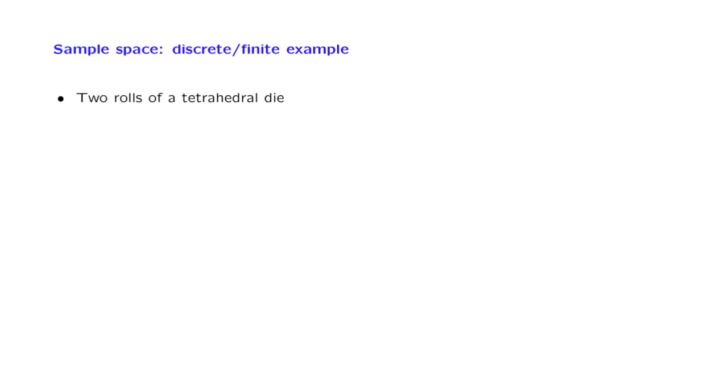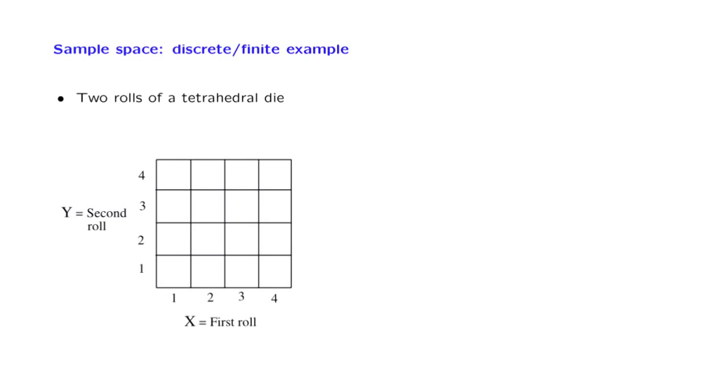What is the sample space of that experiment? Well, one possible representation is the following. We take note of the result of the first roll, and then we take note of the result of the second roll, and this gives us a pair of numbers. Each one of the possible pairs of numbers corresponds to one of the little squares in this diagram.